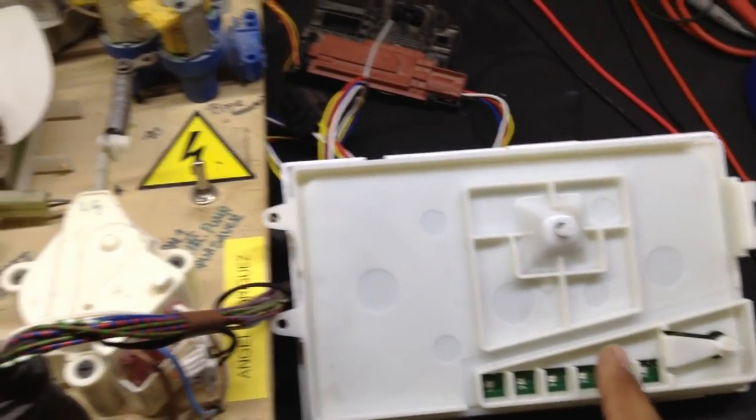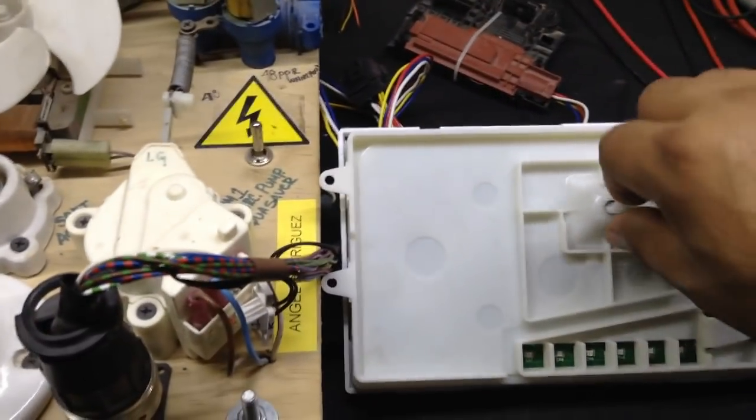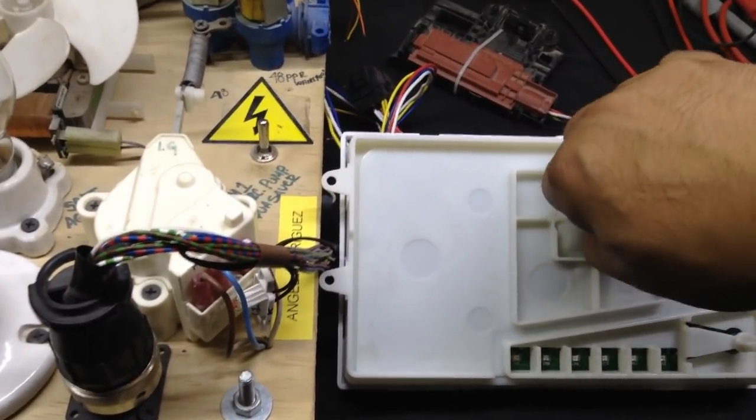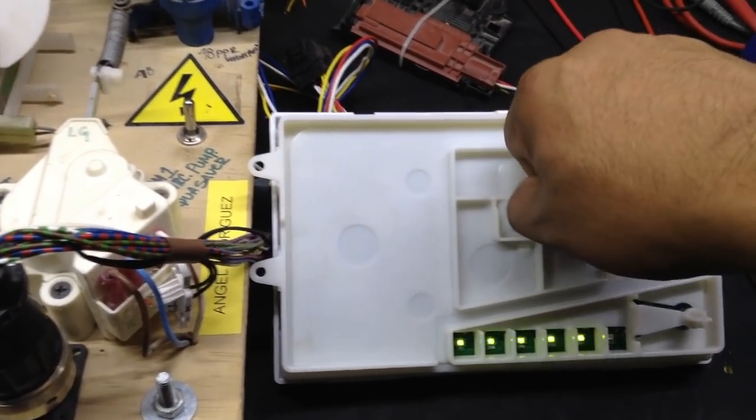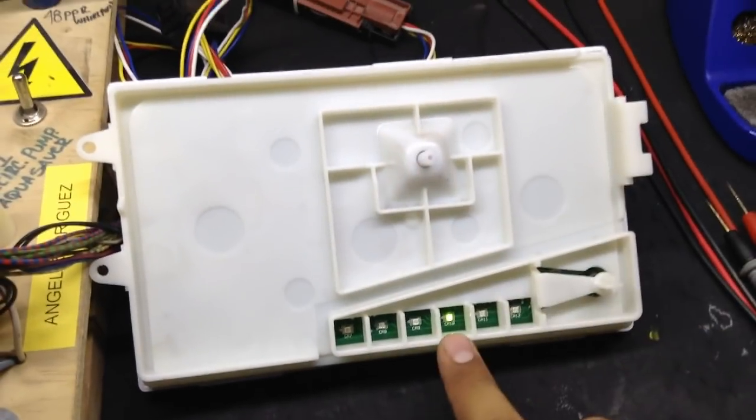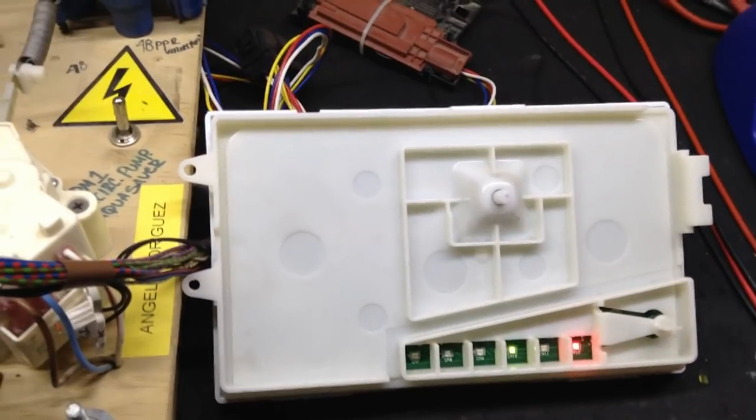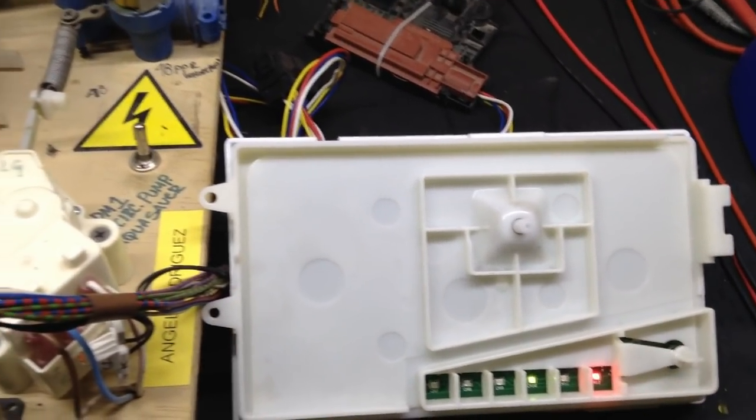Aquí ya tenemos la tarjeta. Tenemos conectado nuestro probador y vamos a entrar en modo servicio. Prueba automática, menú 2. Vamos a inicio. Esto se lleva relativamente unos minutos.